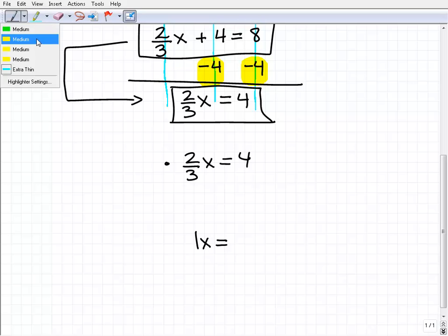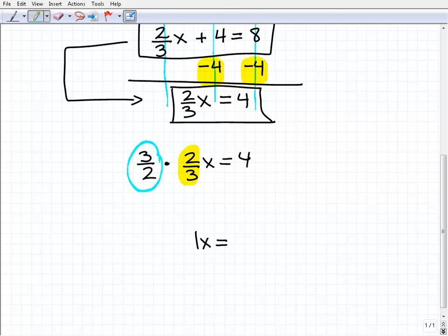In other words, take the fraction right here and just flip it upside down. So two-thirds, if I flip that upside down, I get three-halves. But remember, if I'm going to multiply the left-hand side of the equation by three-halves, I also have to multiply the right-hand side of the equation by that same three-halves.